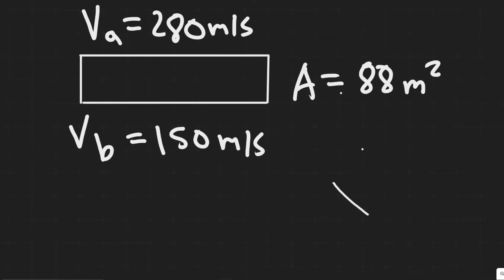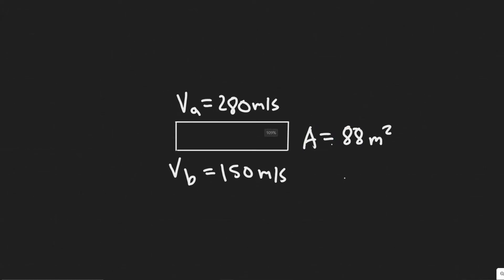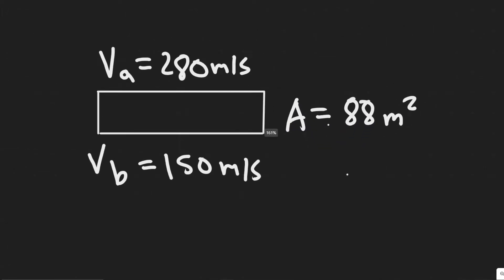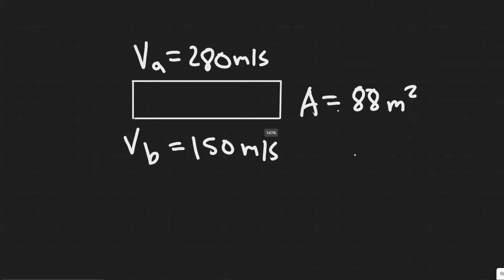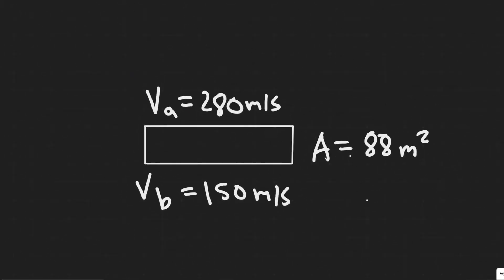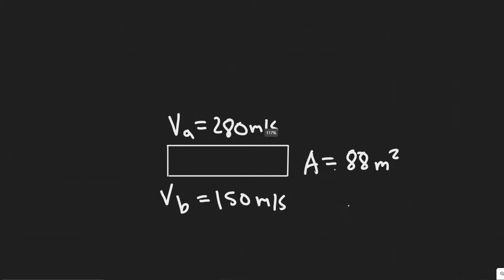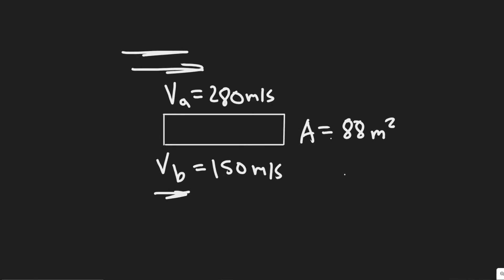Let's imagine that this wing has an area of 88 meters squared. The bottom and top are both 88 meters squared. We know it's going to have velocity on the top, which I'll call VA, of 280 meters per second — you can imagine it passing over like this — and then the bottom has a different value, which I'll call VB.